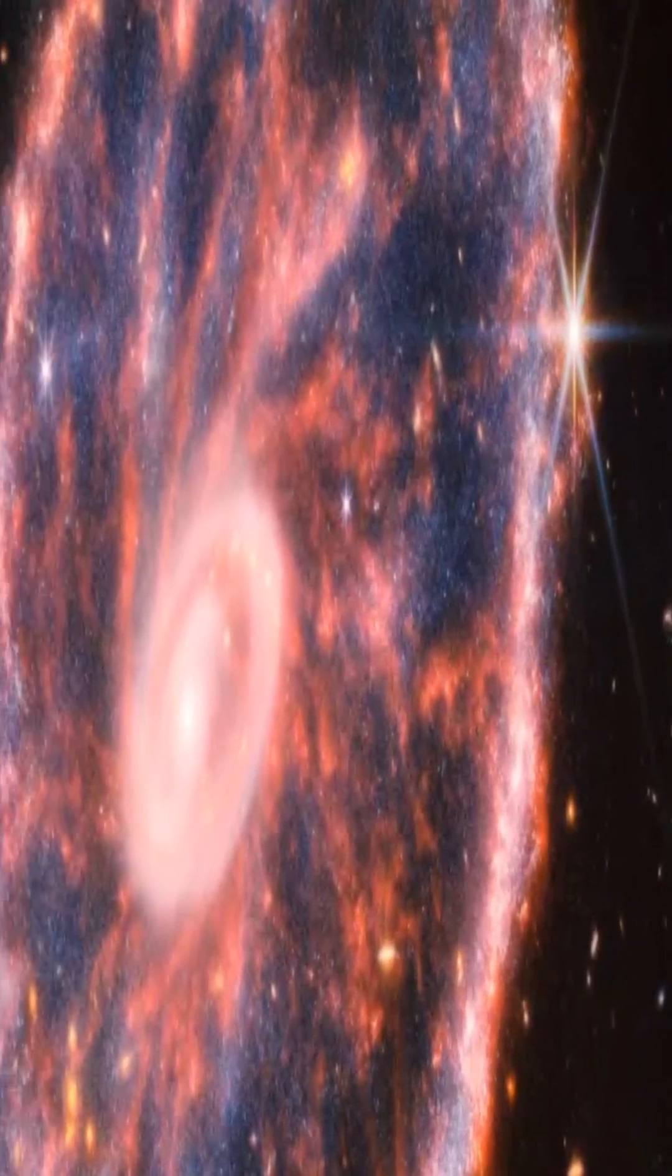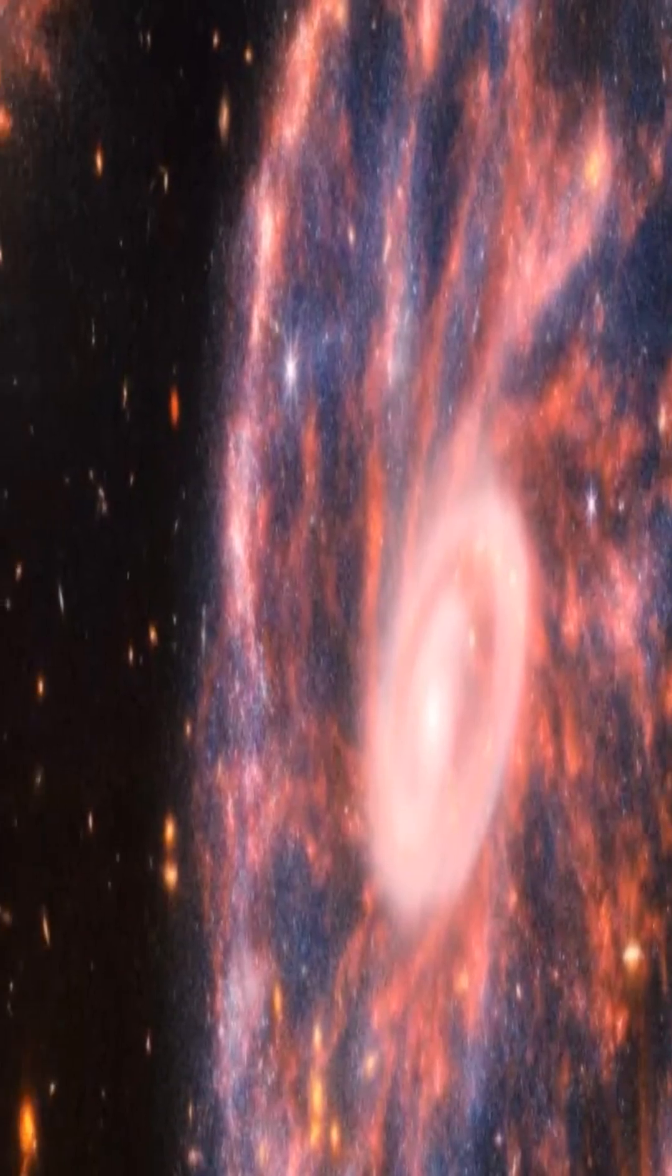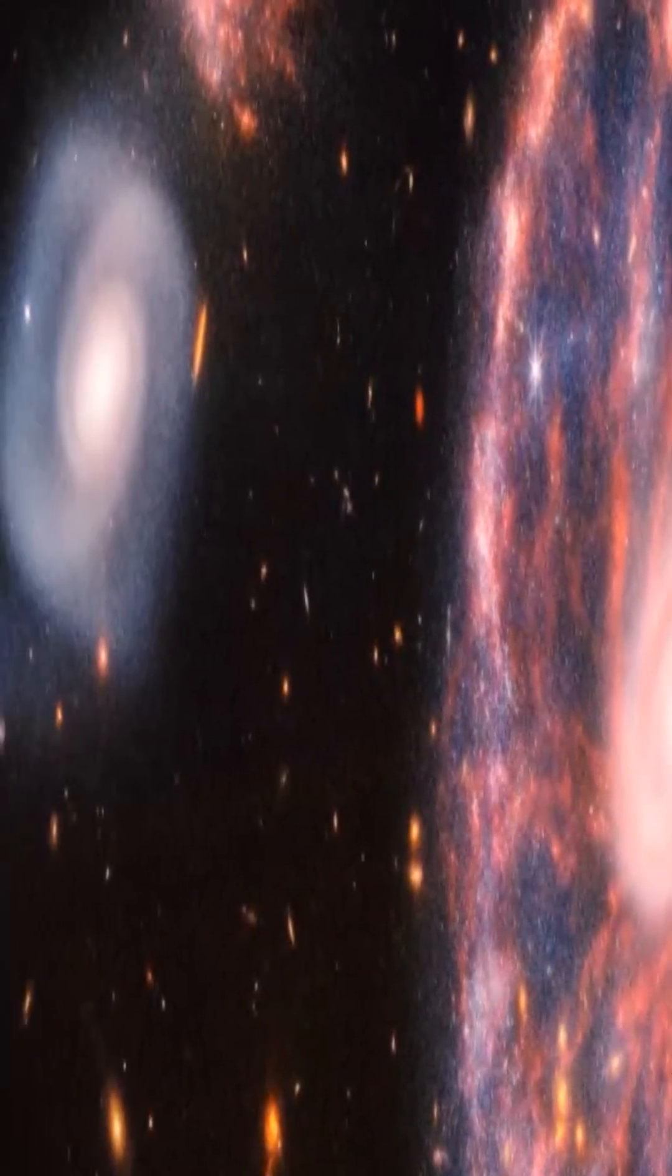The Webb observations also reveal areas rich in hydrocarbons and silicate dust, which form the spokes connecting the inner and outer ring.